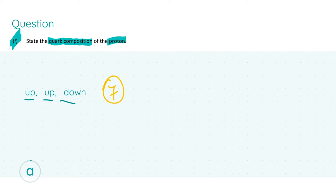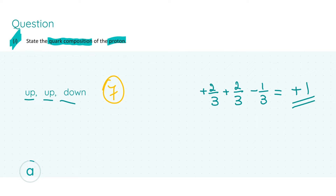A trick to remember the quark combination is to look at the charge values of the quarks. A proton has a charge of plus one and is made of up and down quarks only. The only possible combination is up, up, down: the charge on up quarks is plus two-thirds, so we need two of them, and the charge on a down quark is minus one-third, giving a total overall charge of plus one. My biggest tip is to utilize your formula tables book because hints can be hidden in its pages.